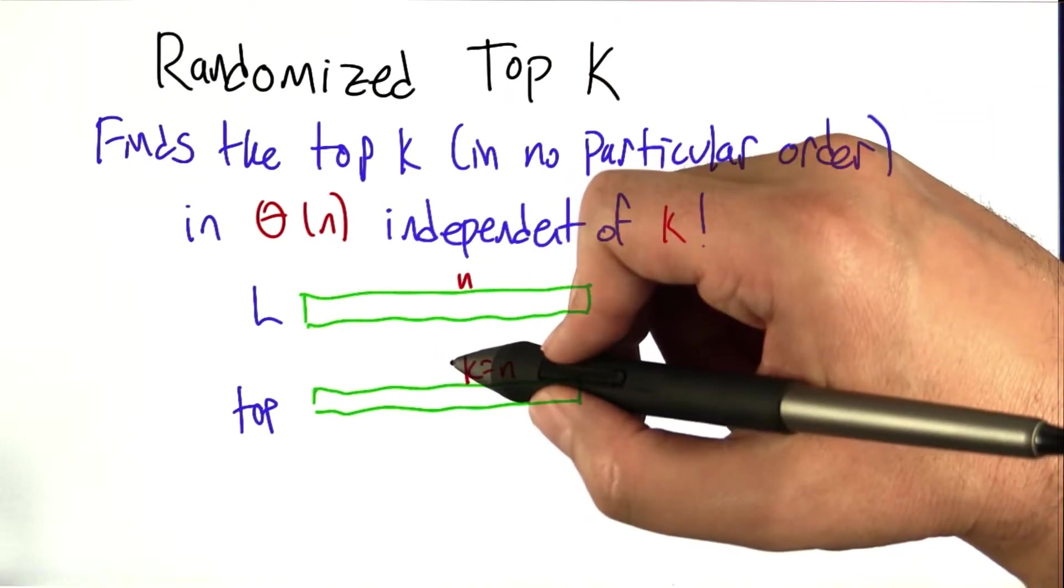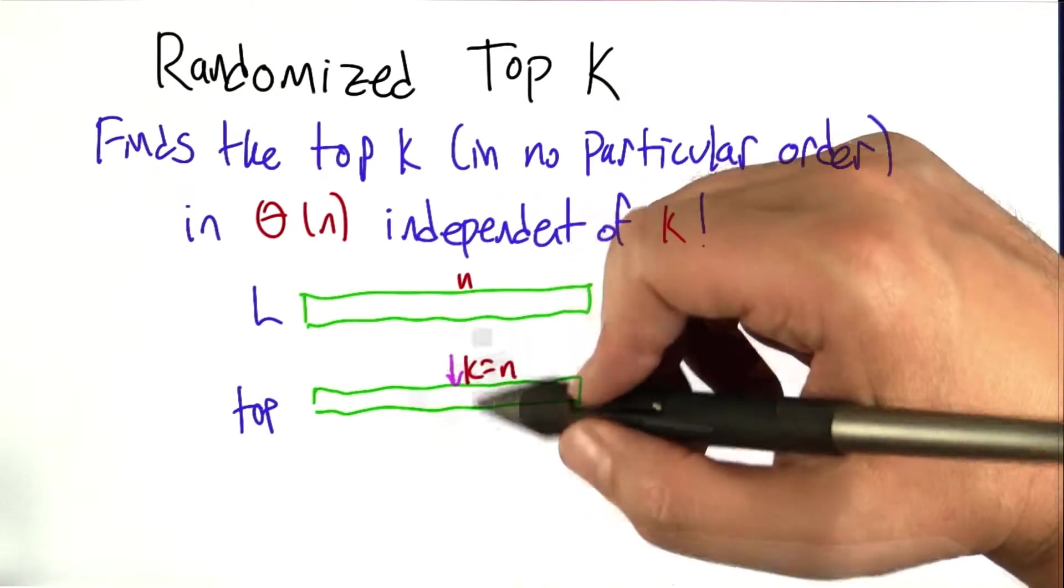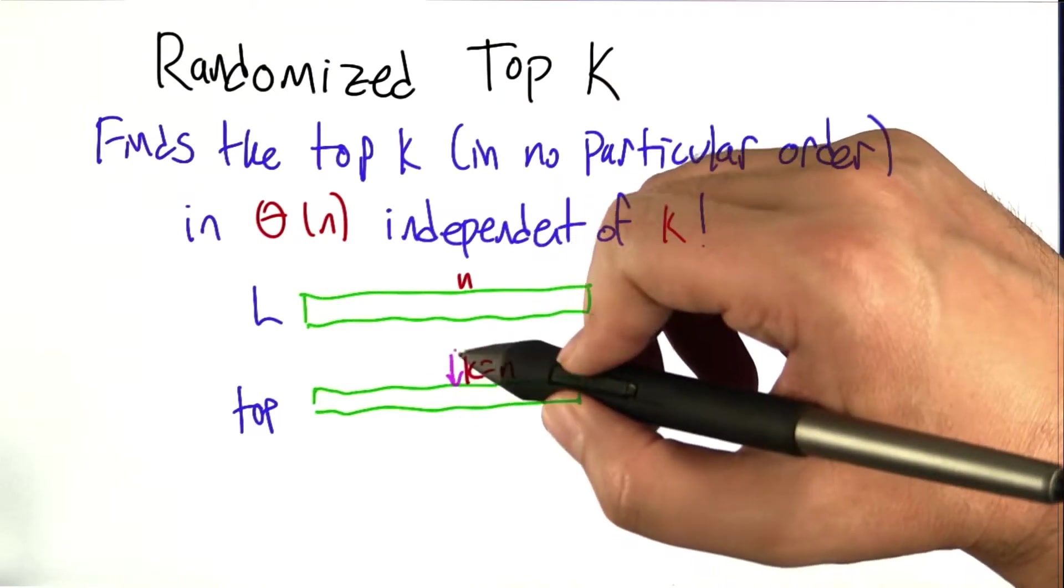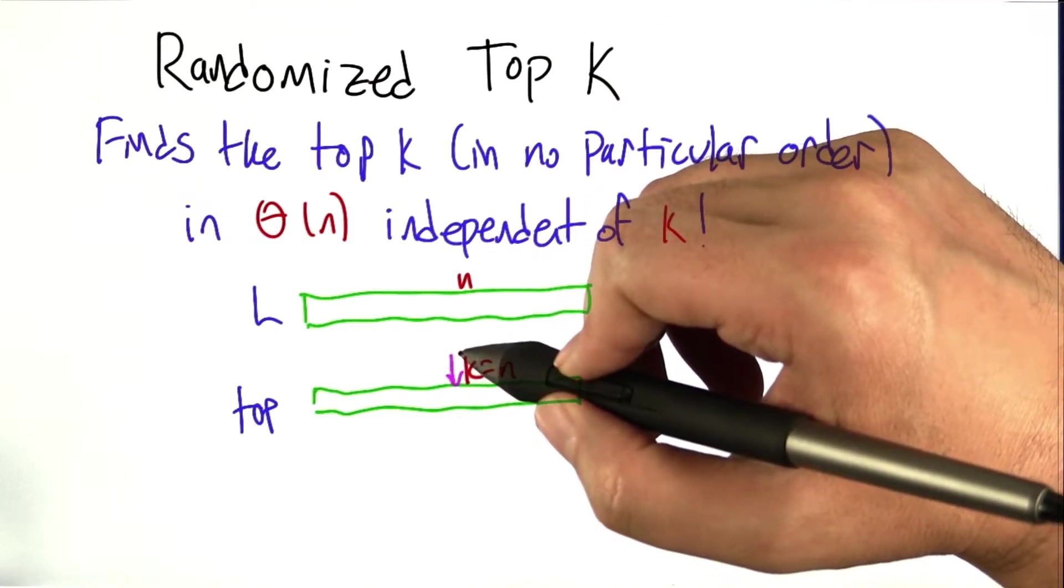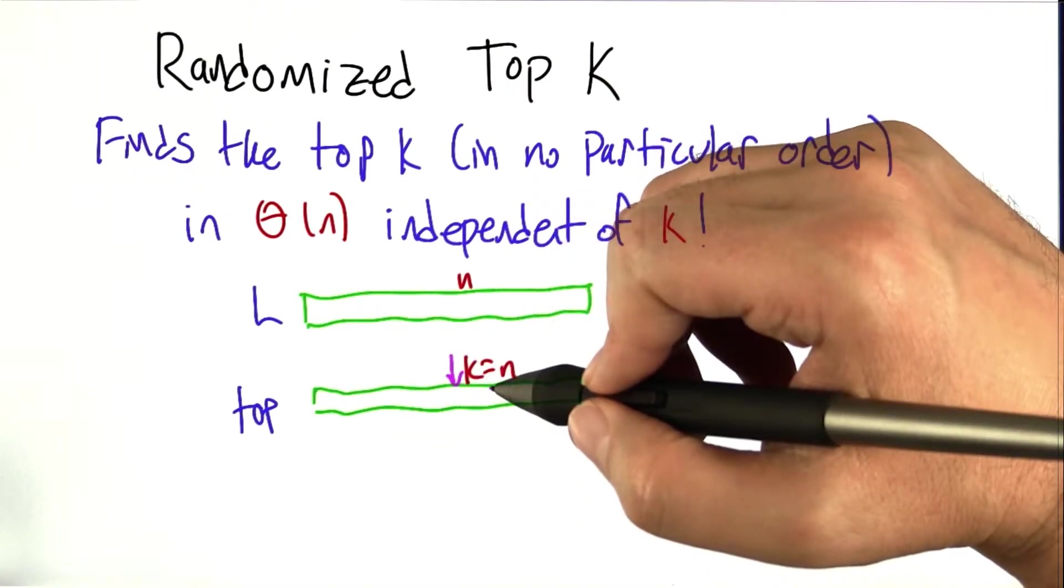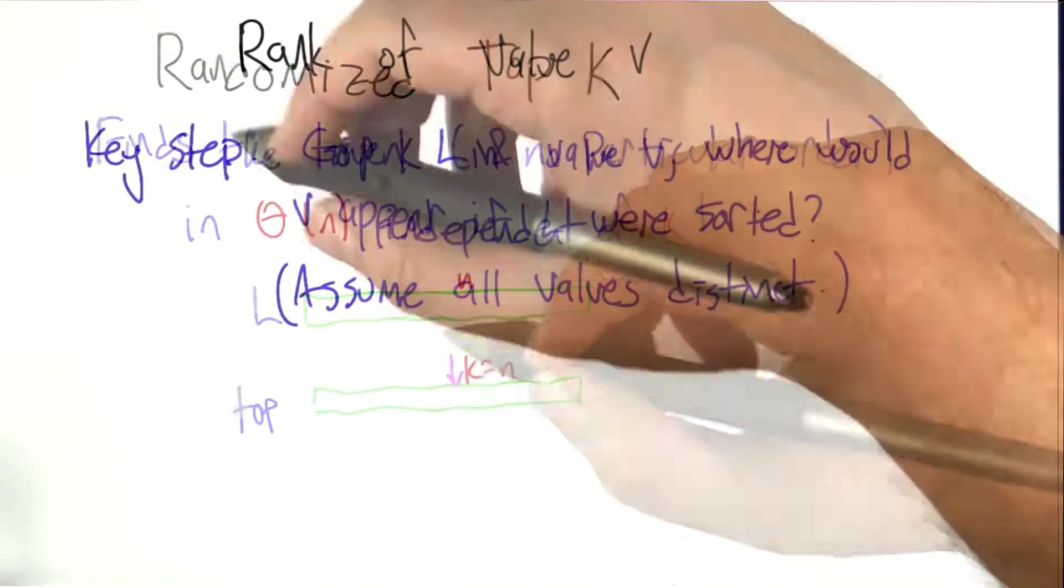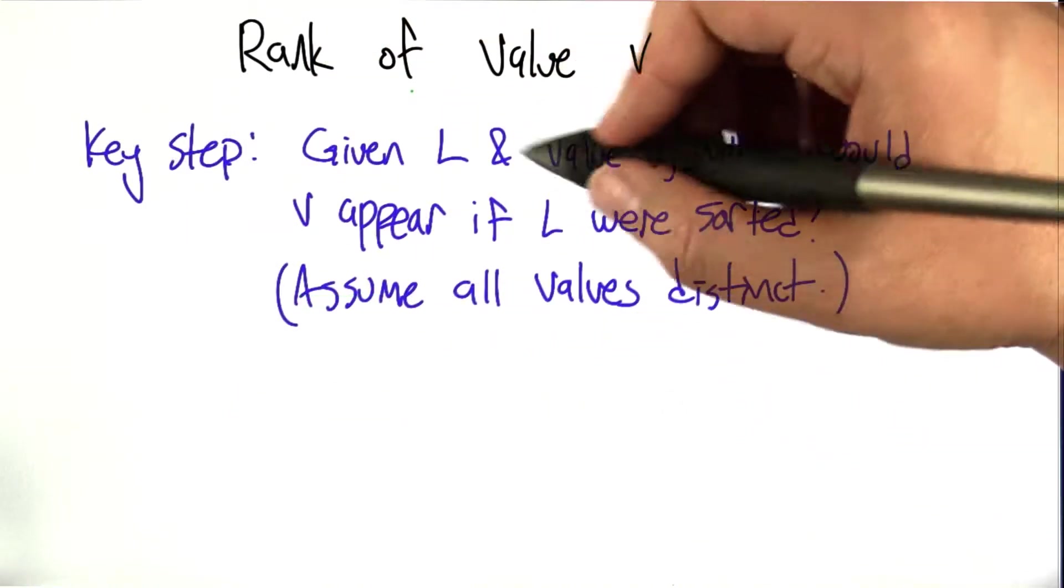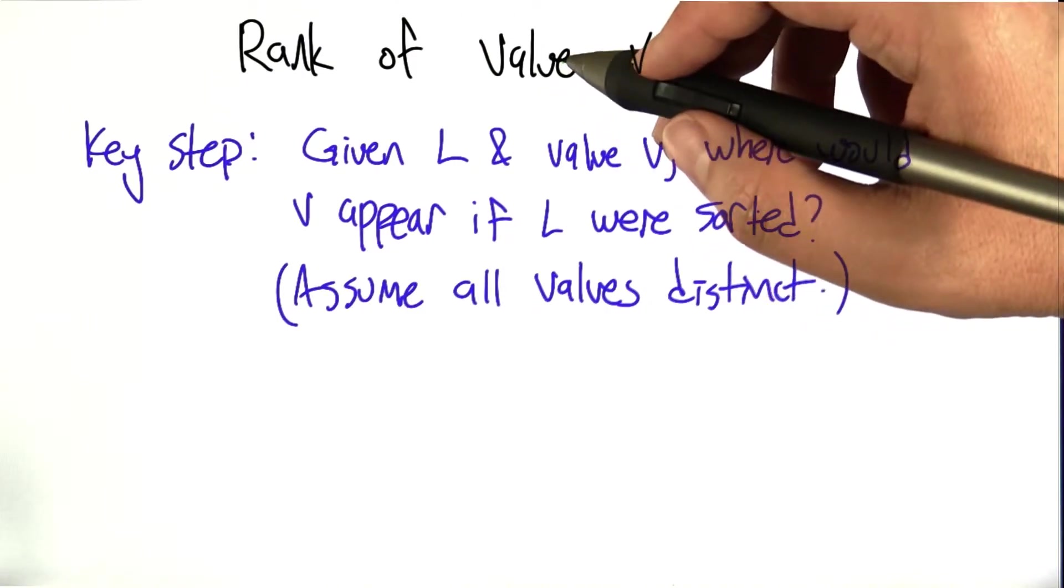Now, what happens in the case where we're looking for the top half seems a little trickier, right? So in the top half case, we can still do this in linear time, even though sorting the whole list is a natural way to do this, to split the top half from the bottom half, and that takes n log n. So the key step of this algorithm is going to be the following simple